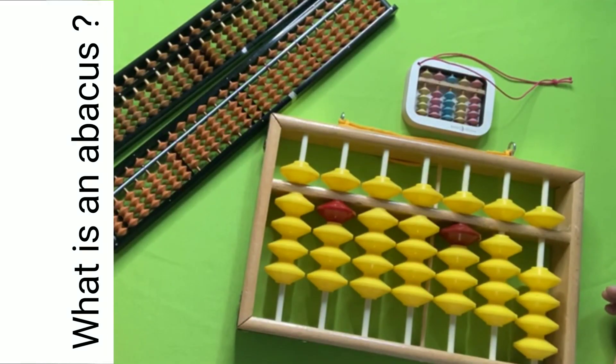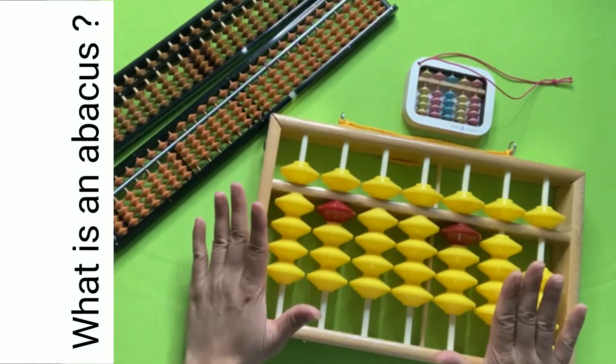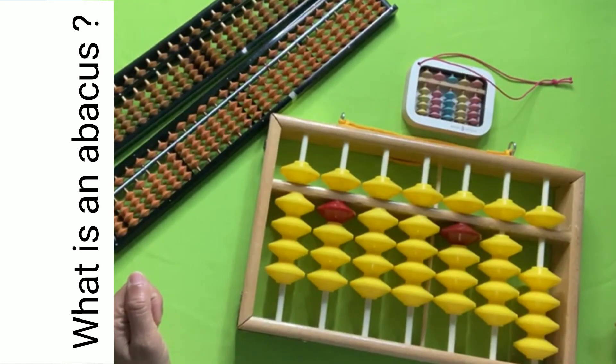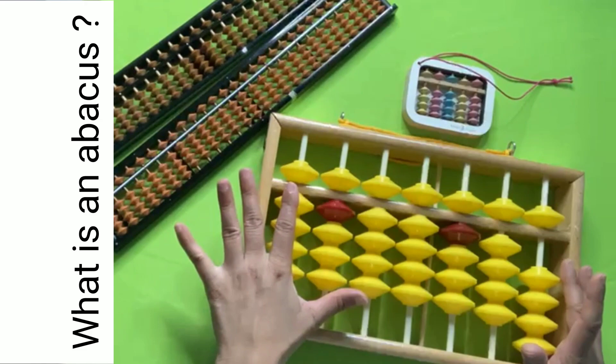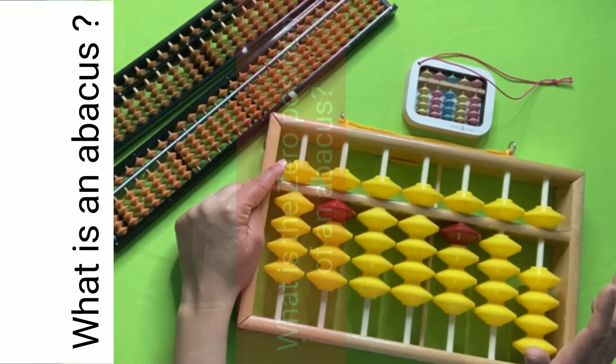What is an abacus? An abacus is a simple device for calculating. There are different types of abacus. I am using this kind of abacus: four bits down and one bit up.